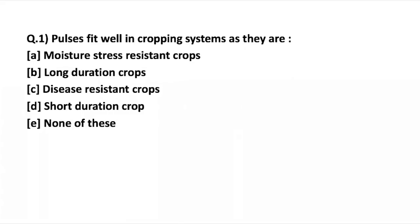Pulses fit well in the cropping systems as they are — various options are given. We need to identify the most appropriate one. The first statement is 'moisture stress resistant crops.' This can be the answer as pulses require less water to grow. Let's look at other options as well.